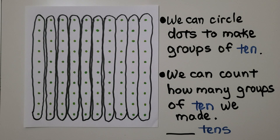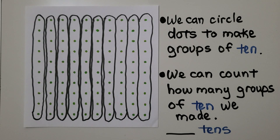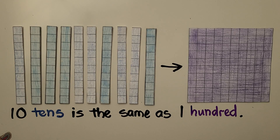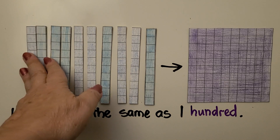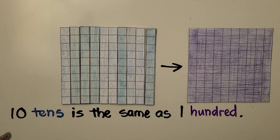We can count how many groups of 10 we made. We made 1, 2, 3, 4, 5, 6, 7, 8, 9, 10 tens. 10 tens is the same as 100. We can take these 10 tens and squeeze them together, and they make 100.